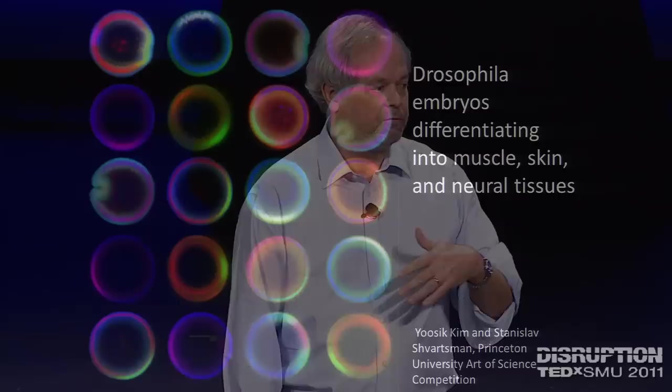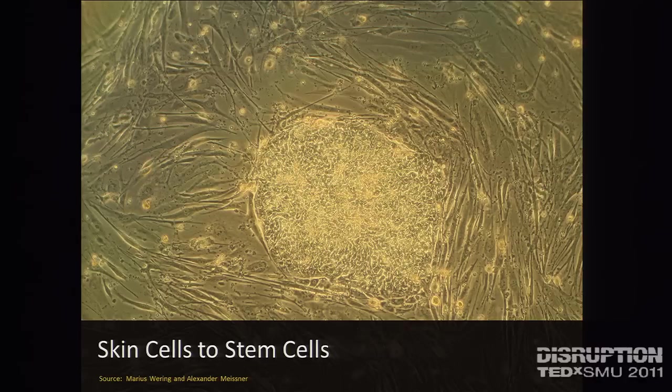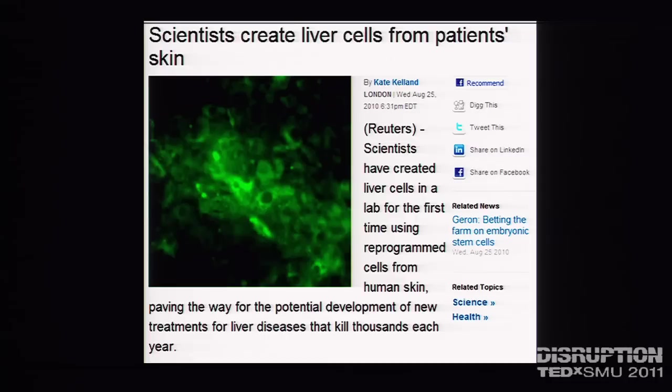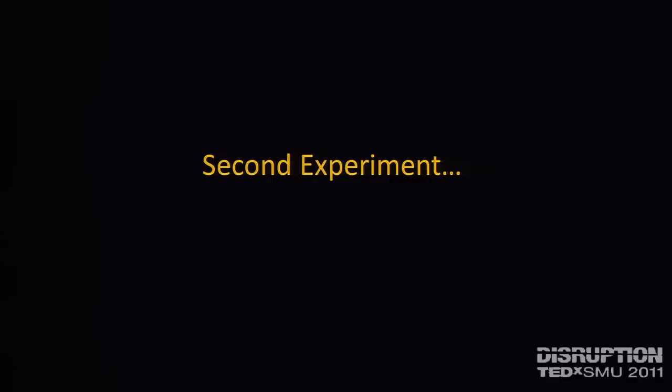You can now do this with fruit flies — cells that are differentiating into muscle, skin, and neural tissues. And within the last year, you've done this with human skin cells. You can now turn human skin cells into stem cells and allow them to begin to grow into things like liver cells. This stuff is moving reasonably quickly.